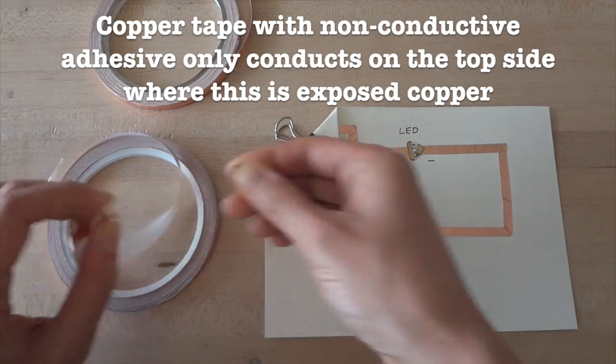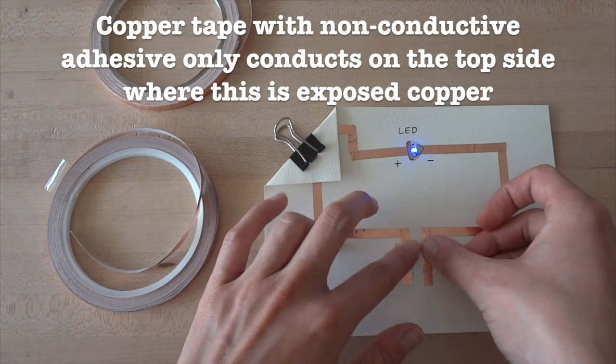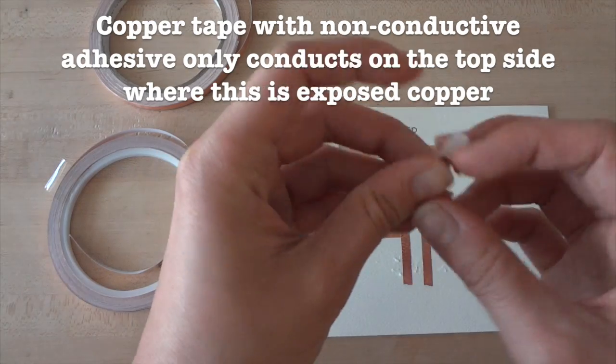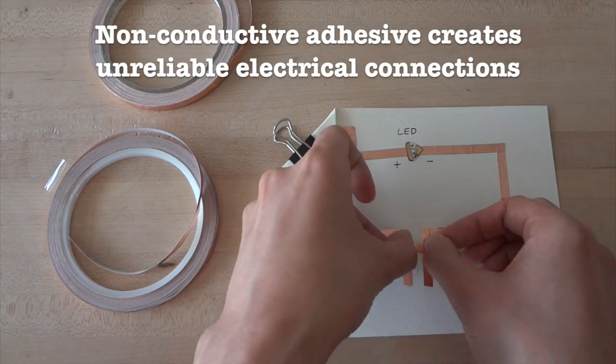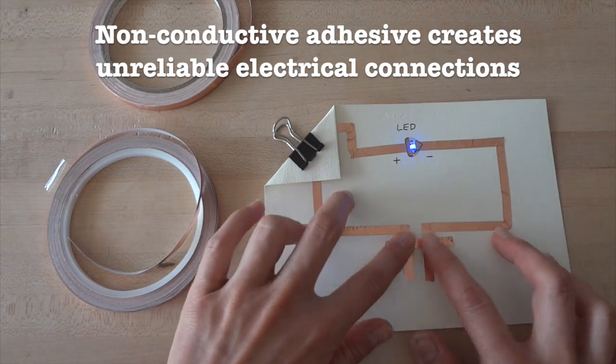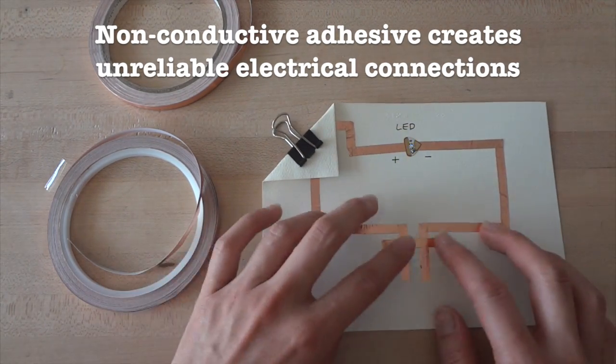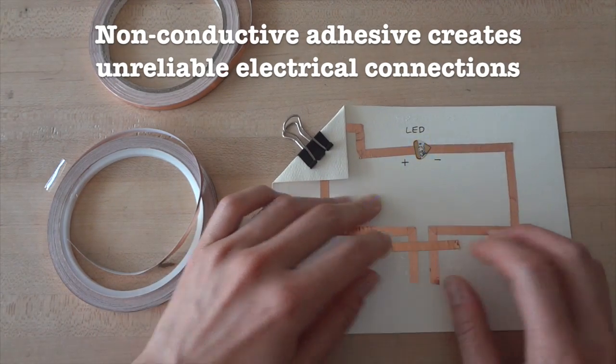On the other hand, with non-conductive adhesive tape, only the top side will reliably conduct electricity. That is, if you stick this tape over a gap in your circuit, it creates an unreliable electrical connection. As a result, your circuit might flicker, or sometimes it won't turn on at all.